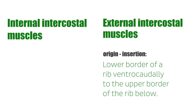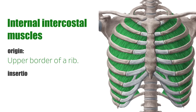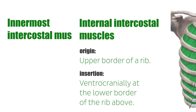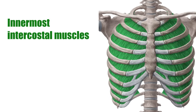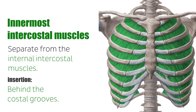The internal intercostal muscles originate at the upper border of a rib and insert ventrocranially at the lower border of the rib above. The last group are the innermost intercostal muscles, which separate from the internal intercostal muscles and insert behind the costal grooves. Inwards, they are bordered by the internal thoracic fascia.